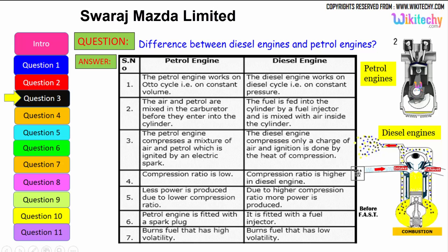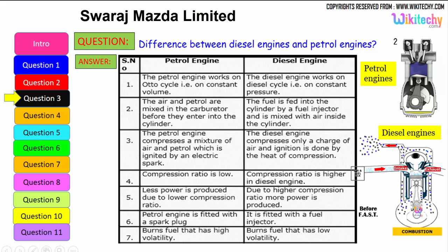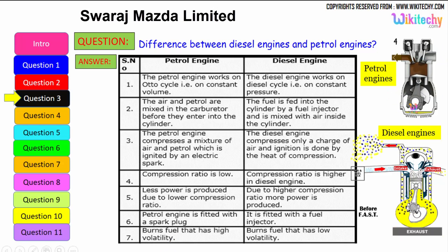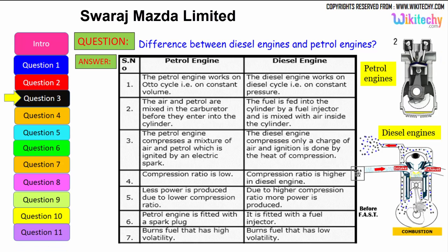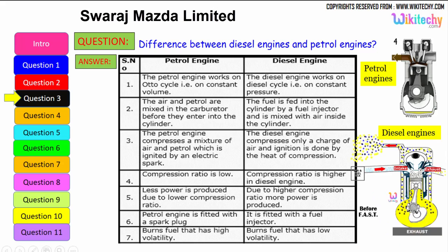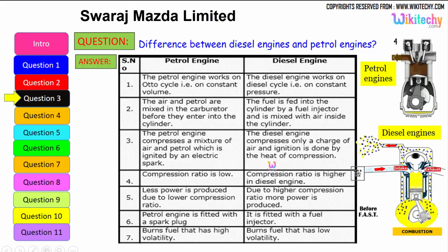The petrol engine is fitted with a spark plug, whereas the diesel engine is fitted with a fuel injector. The petrol engine burns fuel with high volatility, whereas the diesel engine burns low volatility liquid as well. These are some of the key differences between the petrol engine and the diesel engine.